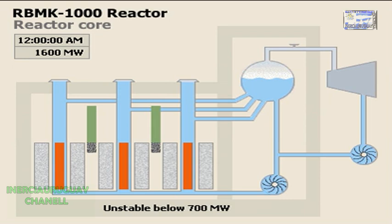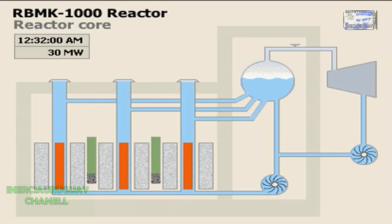They started the test by slowly reducing power to about 500 megawatts, using an automatic system to lower control rods into the reactor. Due to an operator mistake or a failure of the automatic system, the power level suddenly dropped to around 30 megawatts, making it difficult to sustain the fission reaction.